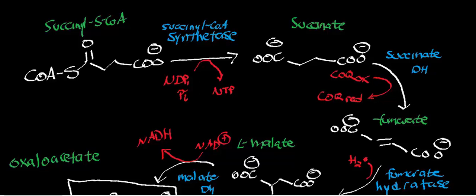Succinyl-CoA enters the TCA cycle. Succinyl-CoA reacts with succinyl-CoA synthetase to give a nucleoside triphosphate that powers the cell and succinate. Succinate then reacts with succinate dehydrogenase — complex II of the mitochondrial respiratory chain — giving reduced coenzyme Q. The electrons first go to FAD, reducing it to FADH2, which passes electrons through iron-sulfur centers to reduce ubiquinone to ubiquinol. Succinate dehydrogenase also produces fumarate — fumarate is two electrons short of succinate.